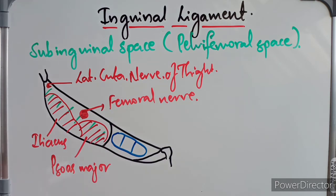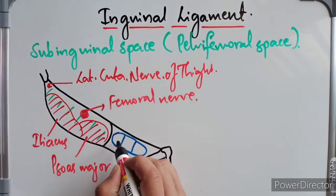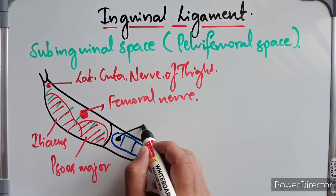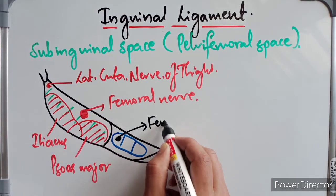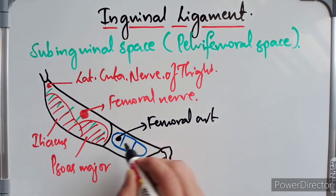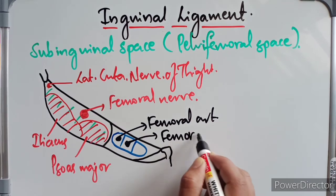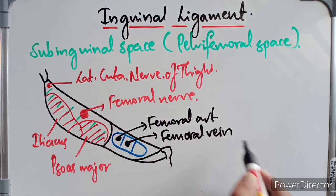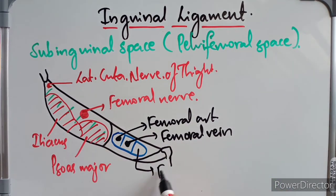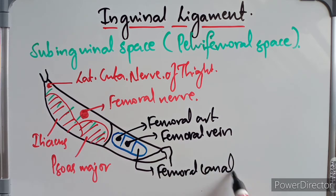The femoral sheath has three compartments: lateral, middle, and medial. The lateral compartment contains the femoral artery, the middle compartment contains the femoral vein, and the medial compartment is the femoral canal, which lodges the lymph nodes.